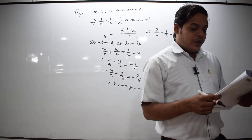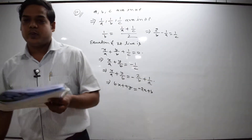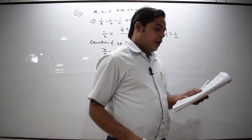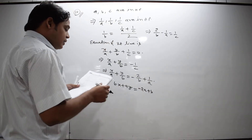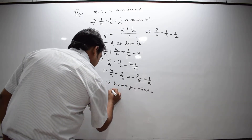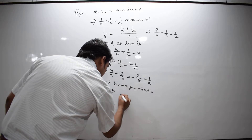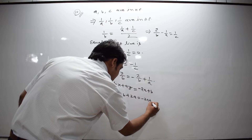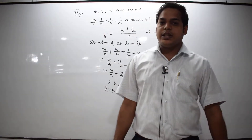Now we check which of the following points always satisfies this — which fixed point the line passes through. There are four options. Checking the first option, taking (-1, 2): it gives -B + 2A = -2A + B, which is a contradiction. So the first option is wrong.